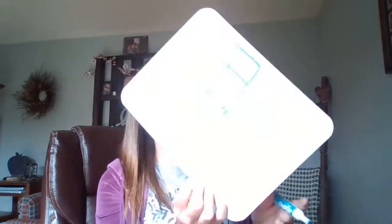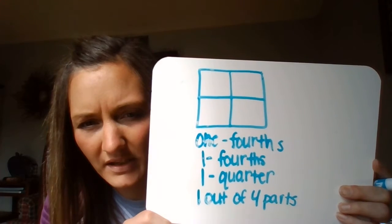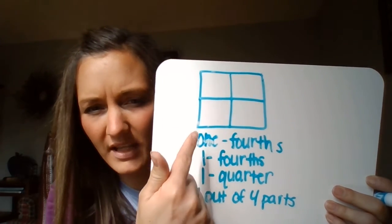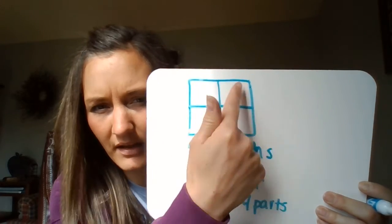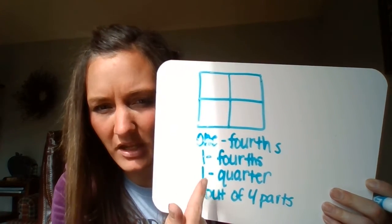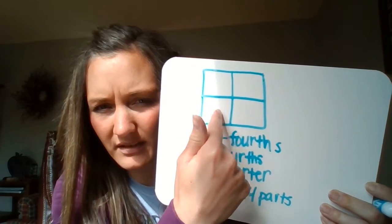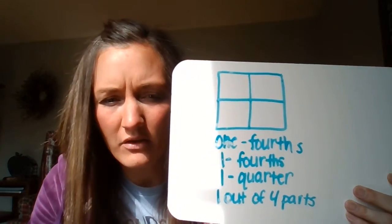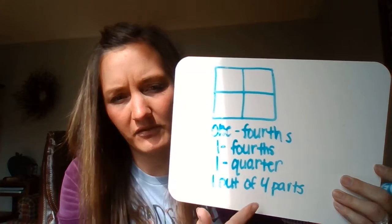Like four quarters equal a dollar, same with this — four quarters equals one whole. So I have one fourth, one quarter, or I could say one out of four parts. So there are the ways to write it when naming one share: one fourth, one out of four parts, one quarter.